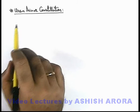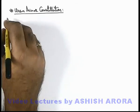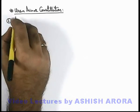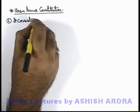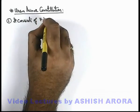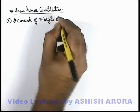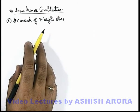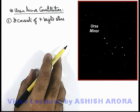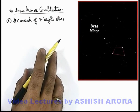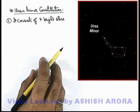Let us now study about Ursa Minor constellation. Similar to Ursa Major constellation, here also we will note that it consists of 7 bright stars, and the stars are arranged slightly in a different pattern which we can see in this picture. Here there are 4 stars and 3 stars attached as a dipper handle.